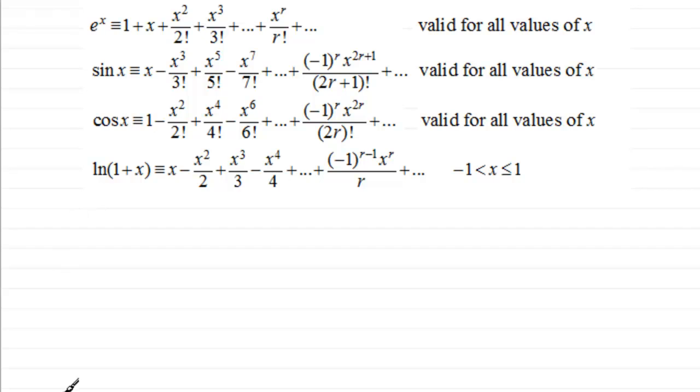First of all, we'll take a look at e to the power minus 2x. All we need to do is just replace the x in e to the x with minus 2x, so that we find our series becomes 1 plus minus 2x, then plus minus 2x squared over 2 factorial, and then plus minus 2x all cubed over 3 factorial and so on. If we work this out, this is going to be identical to 1 minus 2x plus 2x squared minus 4x cubed over 3 and so on. And because e to the x was valid for all values of x, then e to the minus 2x will be valid for all values of x.